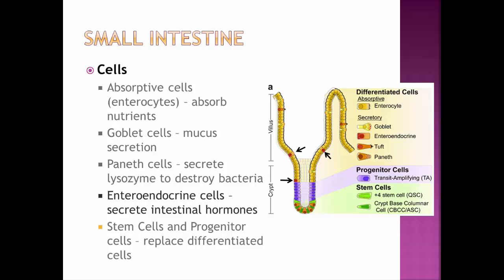Stem cells and progenitor cells are present to replace all the differentiated cells — absorptive cells, goblet cells, Paneth cells, and enteroendocrine cells. These differentiated cells wear out and get sloughed off as food moves through, so they need to be replaced approximately every two to four days. Stem and progenitor cells are undifferentiated cells capable of becoming any of these cell types.